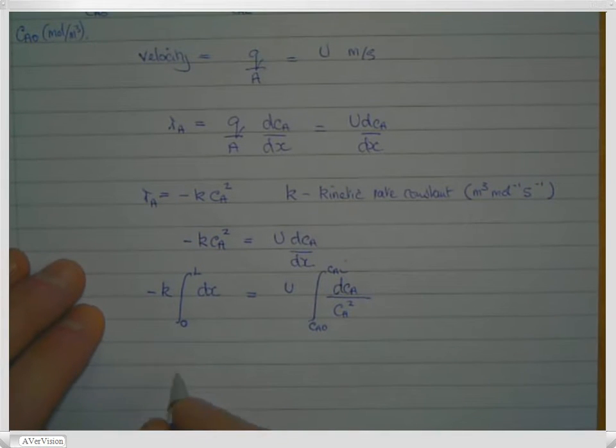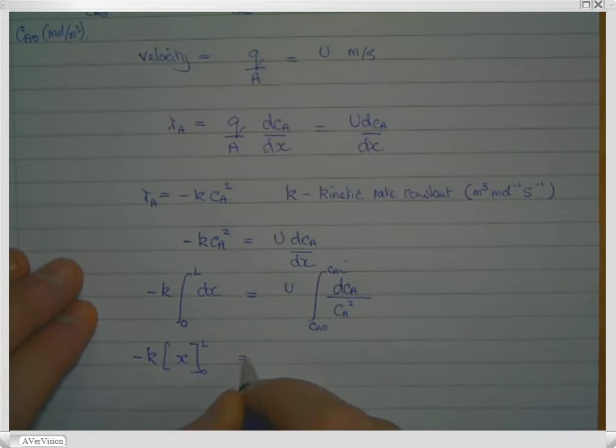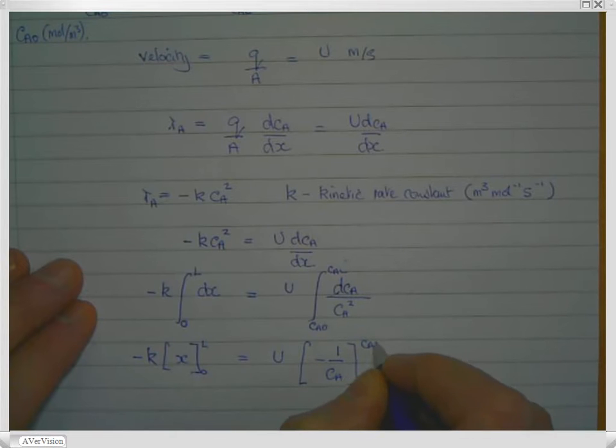So this is a fairly straightforward integration, so what we've got there is x multiplied by minus K, and that's from naught to L, equals U. That's where this integral, so the integral of 1 over Ca squared dCa is minus 1 over Ca. And again, we're going to take limit Ca naught to Ca L.